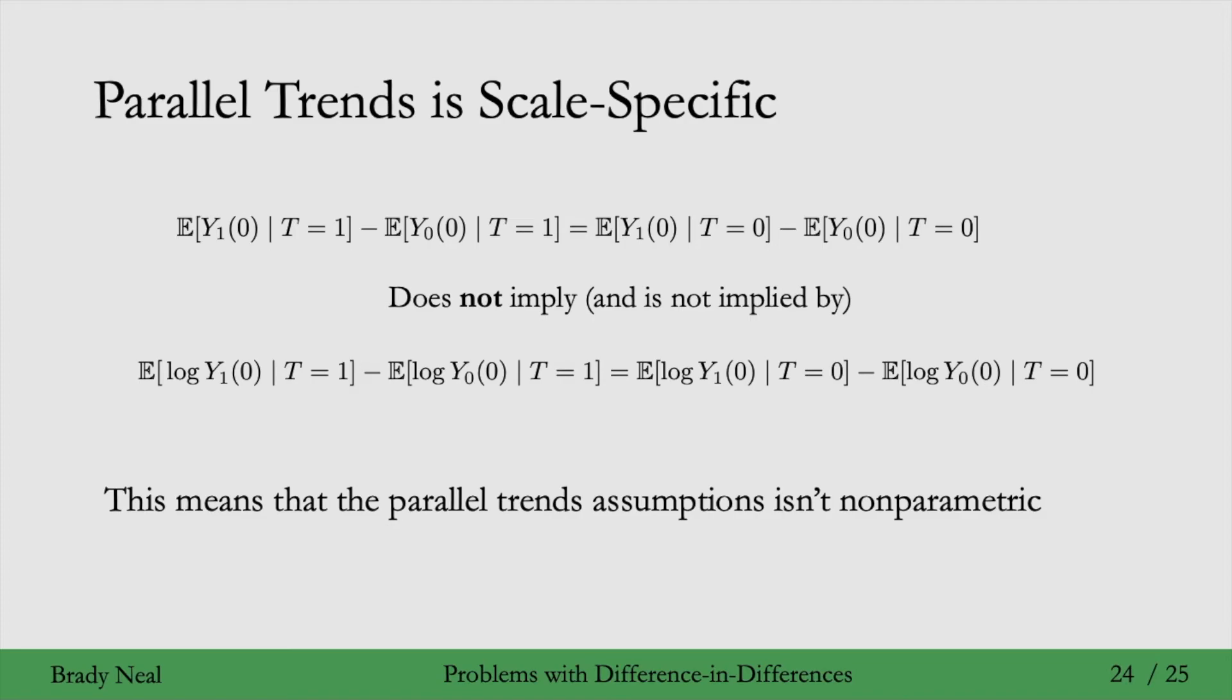Okay, so for example, take the COM estimators that we had back in the estimation week. All the identification going on there was all non-parametric. But here, parallel trends is more like semi-parametric, which is a bit less satisfying. And this is because the parallel trends assumption is inherently about a difference. So this difference here is a very kind of specific semi-parametric form.